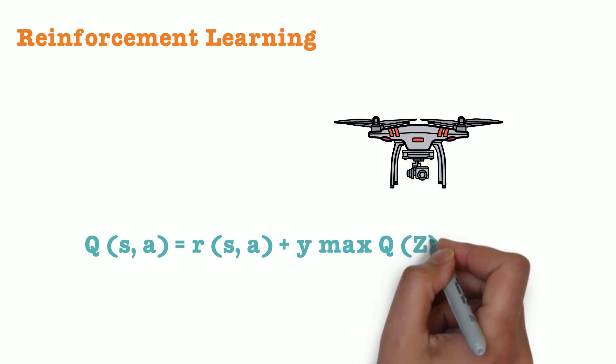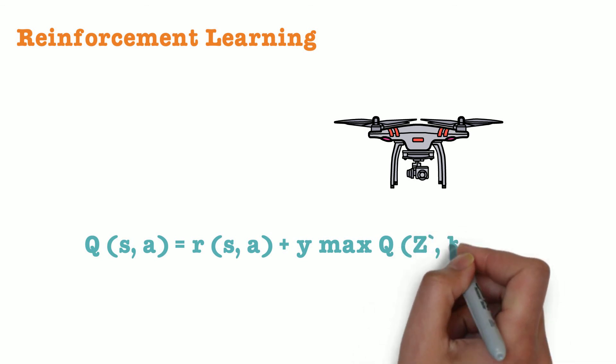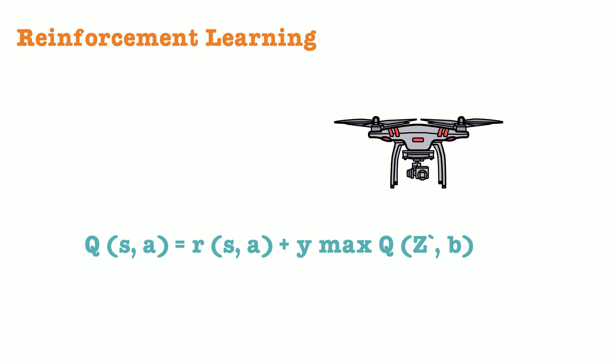So the algorithm keeps modifying the weights of the equation and keeps iterating till it identifies how to maximize the overall reward. And in this case, the implication of this behavior would be for the drone to take off and land without crashing.